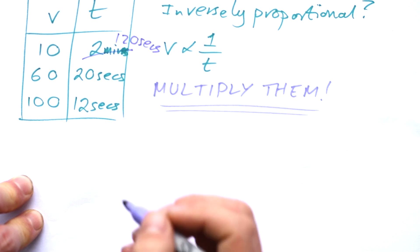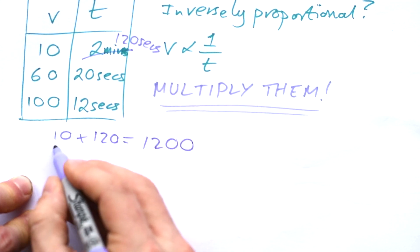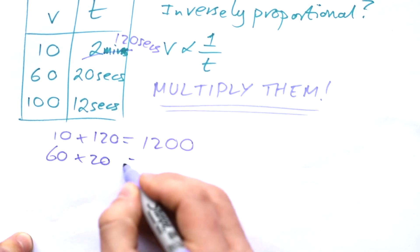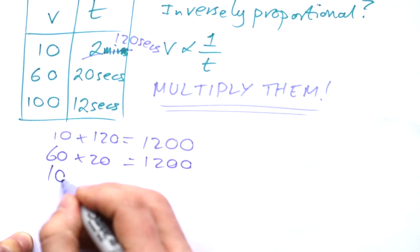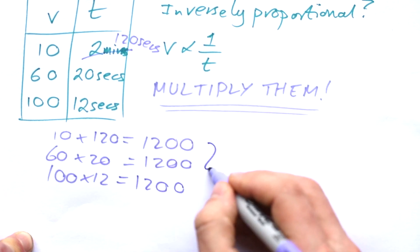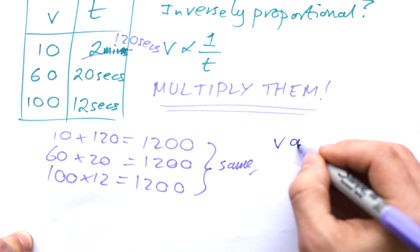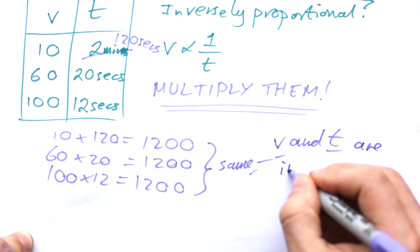Okay, now I can multiply them out. 10 times 120, 1,200, 60 times 20, also 1,200, and 100 times 12. Of course, that's going to be 1,200 again. These are all the same. Therefore, v and t are inversely proportional.